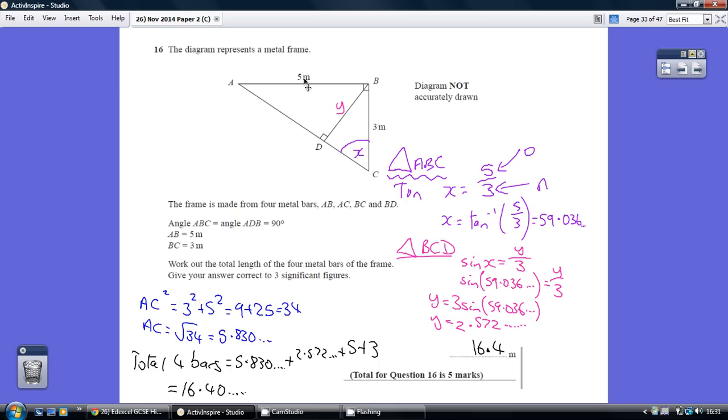Tan x is opposite over adjacent, 5 over 3. Inverse tan both sides, so we get x equals inverse tan 5 over 3, which is 59.036 degrees.